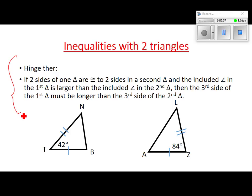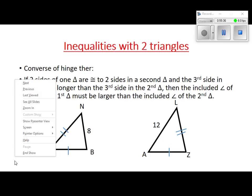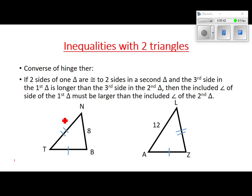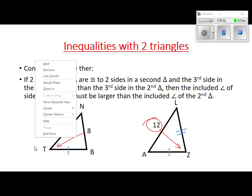Applying the hinge theorem: we have two triangles with two congruent sides. One has an included angle of 84 degrees, the other has 42 degrees. What can you tell me about segment AL? AL has to be longer than segment NB. That's all that theorem says. The converse says: if this side is longer, then the included angle must be bigger than the other angle. We're not going to write the converse down — everybody can work it out from that.